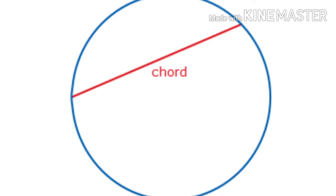You should learn these points, because if we have a problem to solve, this is important. The line segment joining any two points on the circle is called a chord of the circle. Next is diameter.